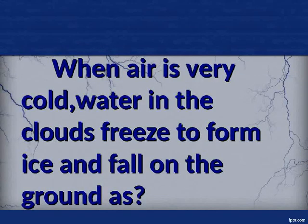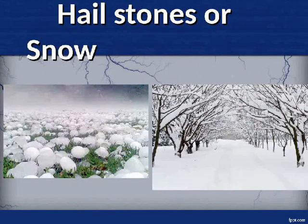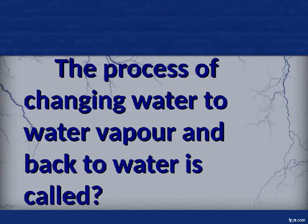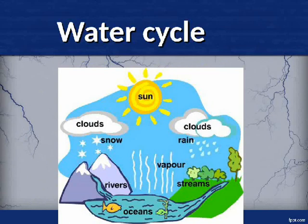When air is very cold, water in the clouds freezes to form ice and falls on the ground as hailstones or snow. The process of changing water to water vapor and back to water is called the water cycle.